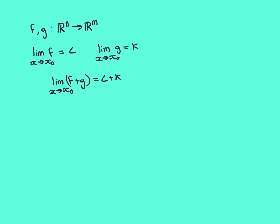Welcome back. We're now going to discuss the algebra of limit results for limits of functions. Our codomain here is in general a vector space, and therefore there are only two general algebra of limit results: addition and scalar multiplication, because in general we're not going to be able to multiply two vectors together or divide one vector by another.